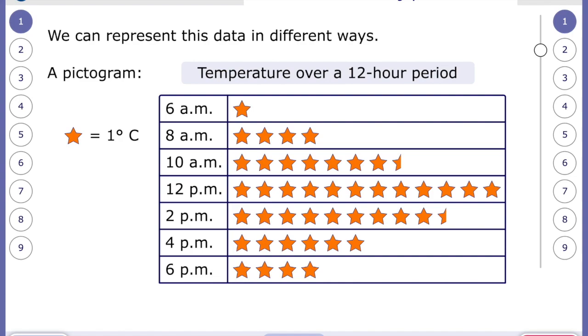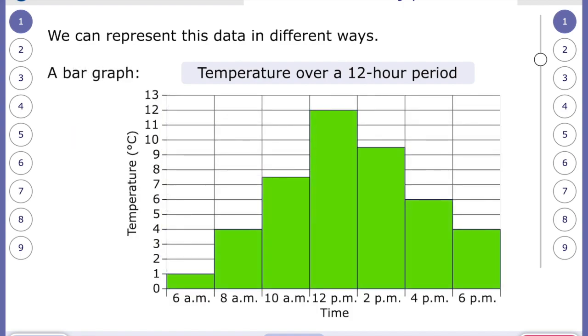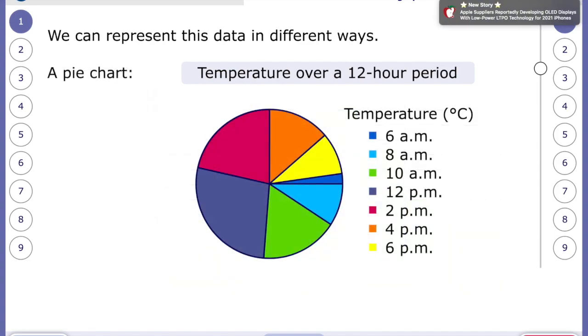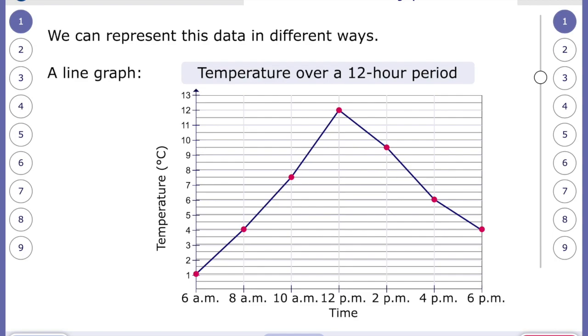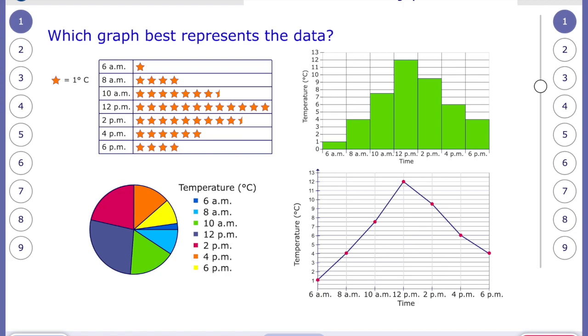They then represented the information the data in different types of graphs so they created a pictogram where they literally showed pictures of stars to represent degrees so if you look at the pictogram you can see at 6pm it was 4 degrees Celsius. They then created a bar graph, then created a pie chart and then finally a line graph. Which graph best represents the data? Pause the video and have a think.